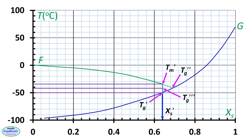More explanations of these terminologies are given in our published papers, and the references are given in the description box. Now we can see the glassy, rubbery, solution, and frozen regions in the state diagram.